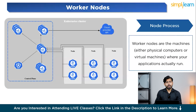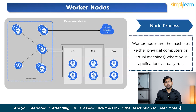Worker nodes are the machines — either physical computers or virtual machines — where your applications actually run. Think of them as the workers of your Kubernetes cluster. They execute your app workloads and handle the tasks required to run them. Each worker node in Kubernetes runs three main processes: container runtime, kubelet, and kube-proxy. Let's understand each one of them.